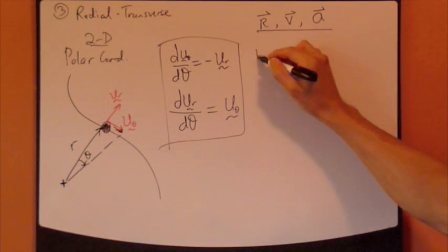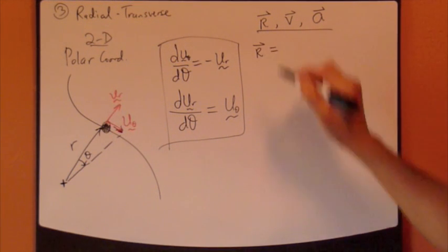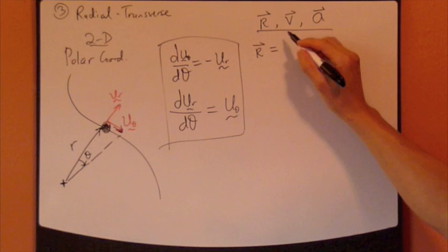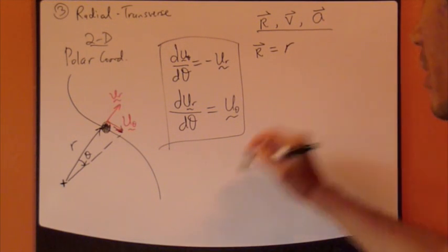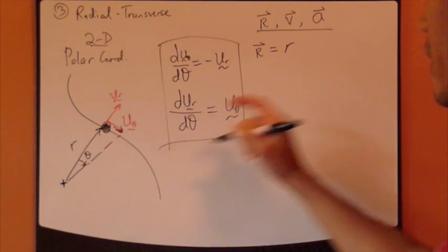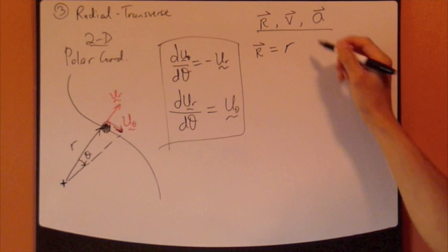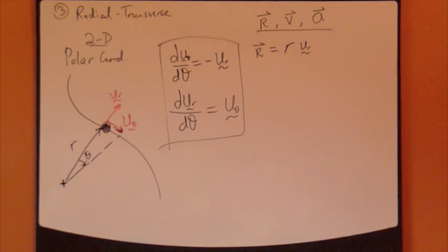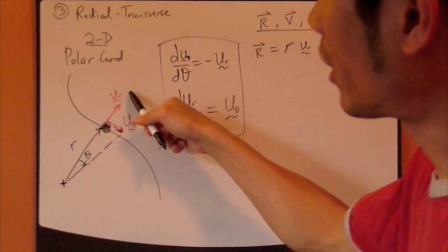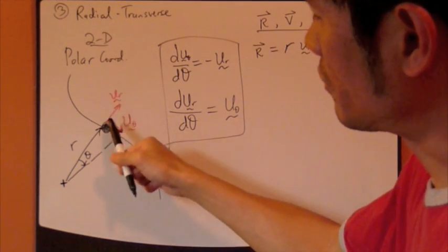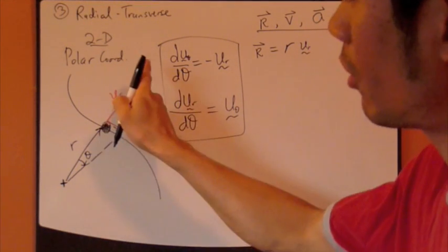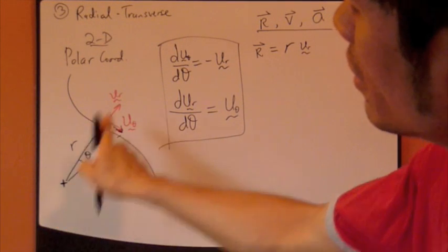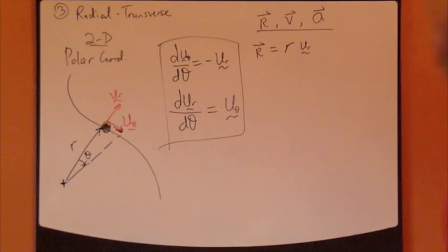r is very straightforward. Our vector is simply the distance r and the unit vector which is u_r. Just keep in mind that u_r is a unit vector that points outward, points outward from the point of origin.